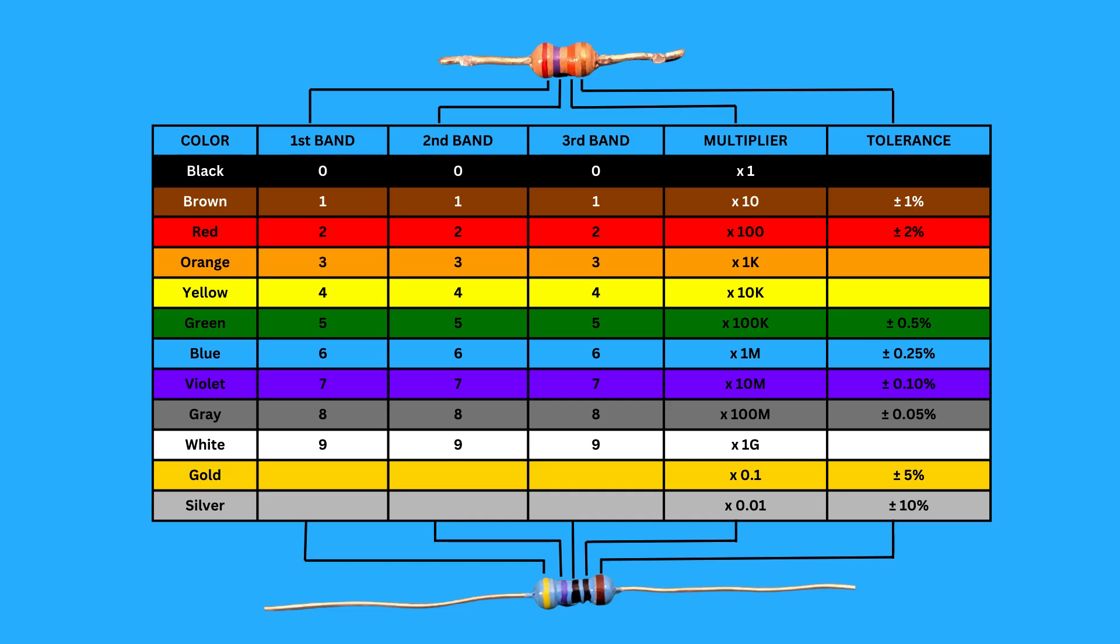For this four band resistor, the first band cannot have the gold color. As you can see from this chart, the gold color can only be used for the multiplier or tolerance. This means the gold color has to be on the right side.